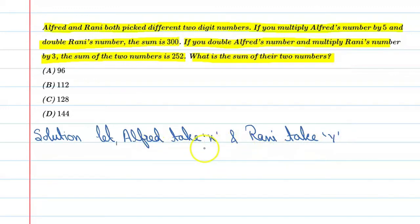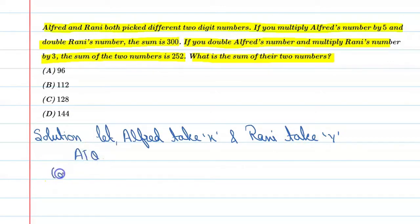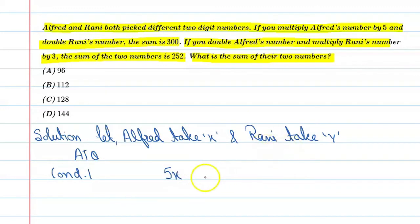Assume that the number Alfred chose is x and Rani's number is y. According to the question, condition 1 is: multiply Alfred's number by 5 and double Rani's number. When you add both, the sum is 300. So we get the equation: 5x + 2y = 300. Say this is equation number 1.